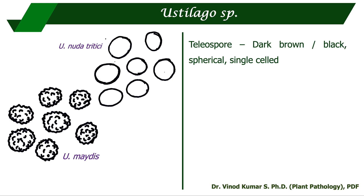Coming to Ustilago species causing smut disease: Ustilago nuda tritici causes loose smut of wheat and Ustilago maydis causes head smut of maize. These are the teliospores, which are dark brown or black, spherical, and single-celled. The key difference between the two: Ustilago nuda tritici has smooth-walled teliospores, while Ustilago maydis has rough-walled teliospores with spine-like structures.